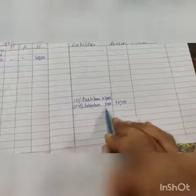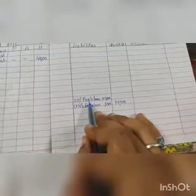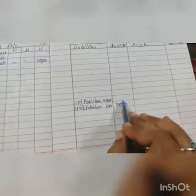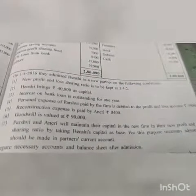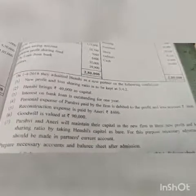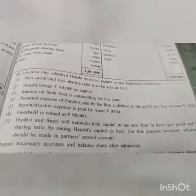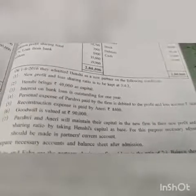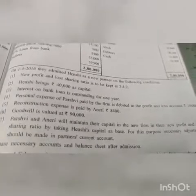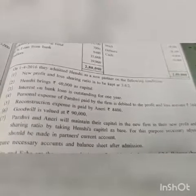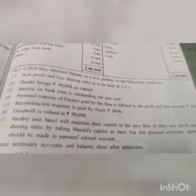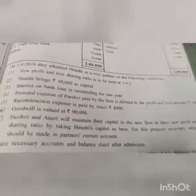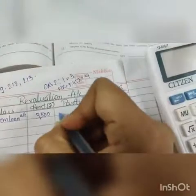Next adjustment: personal expense of Parshvi paid by the firm is debited to P&L account — 5,600. As it is debited in P&L account, in the Revaluation Account you will credit it. Since it is Parshvi's personal expense paid by the firm, the second entry goes to 'By Parshvi's Personal Expense Account: 5,600.'